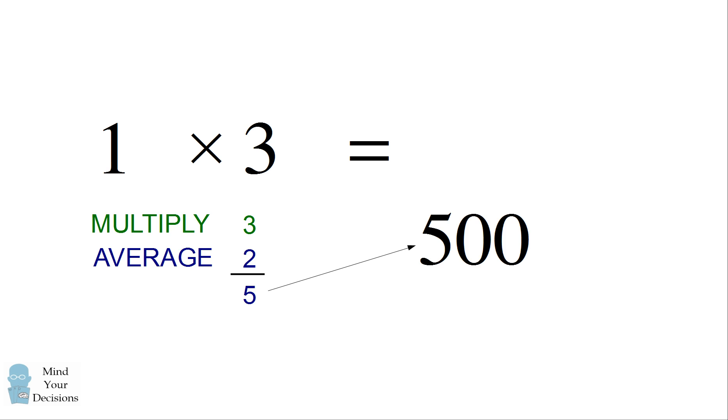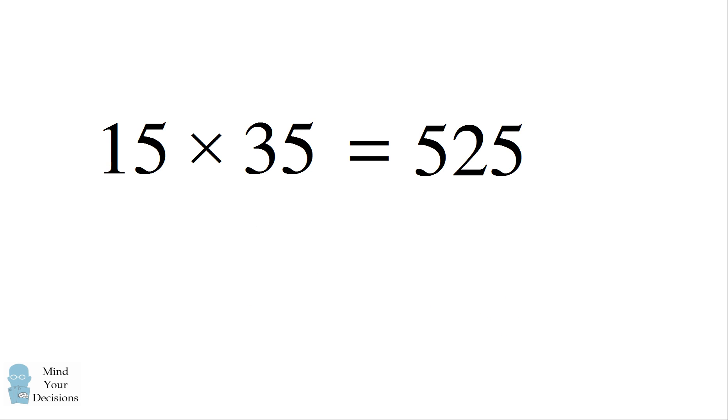We multiply this by a hundred to get 500. And finally we add 25. We get the result of 525. And that's our answer. 15 times 35 is 525.